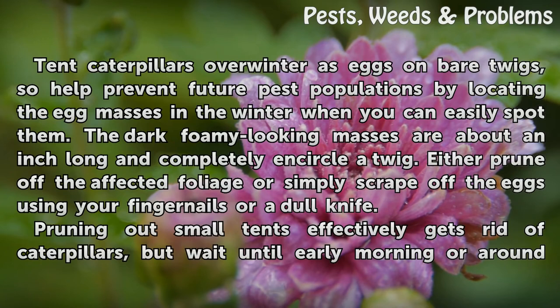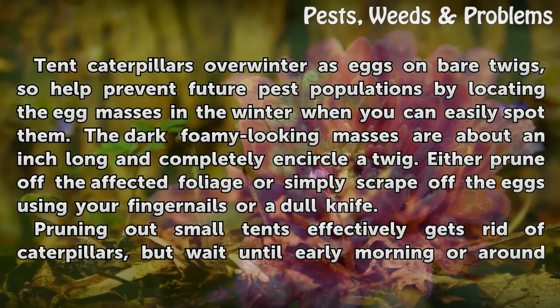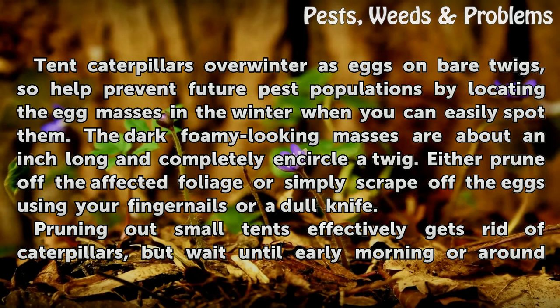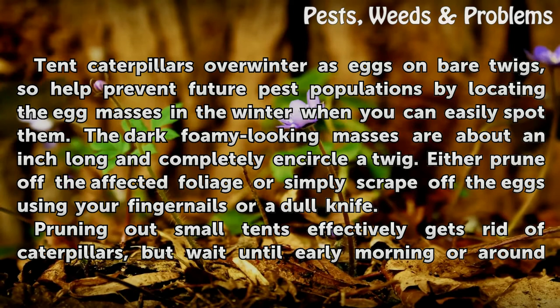Tent caterpillars overwinter as eggs on bare twigs, so help prevent future pest populations by locating the egg masses in winter when you can easily spot them. The dark, foamy-looking masses are about an inch long and completely encircle a twig. Either prune off the affected foliage or simply scrape off the eggs using your fingernails or a dull knife.